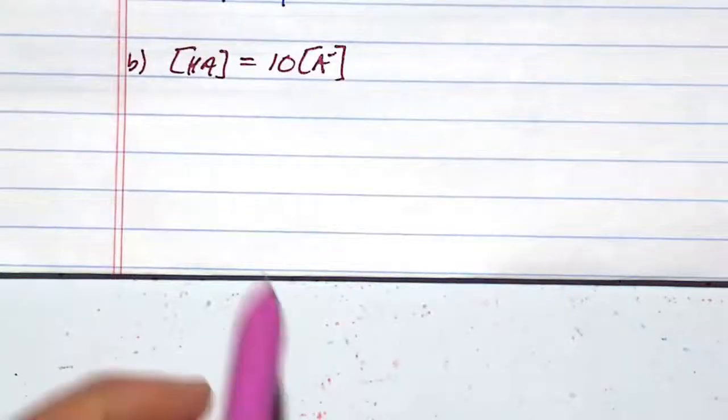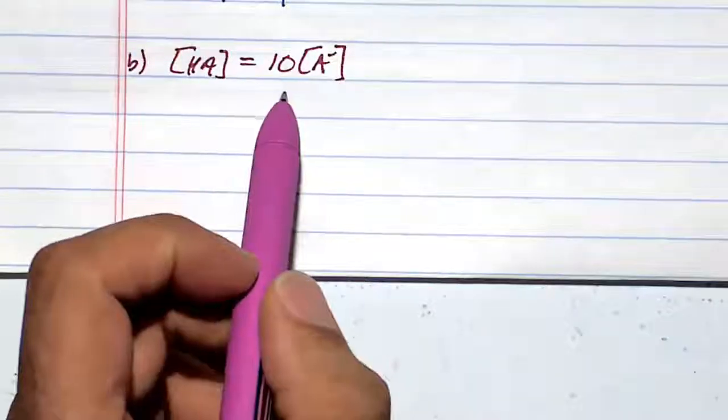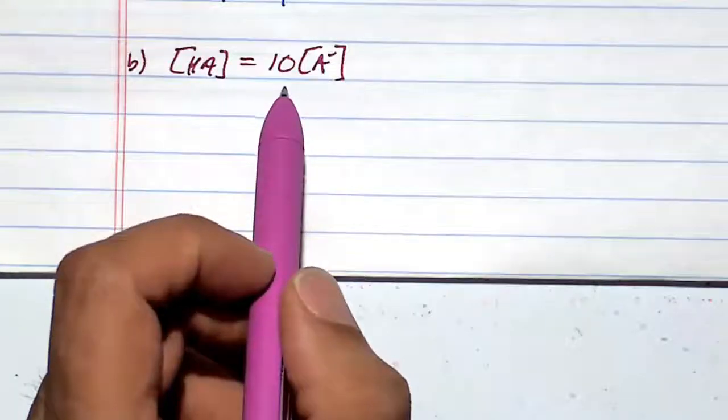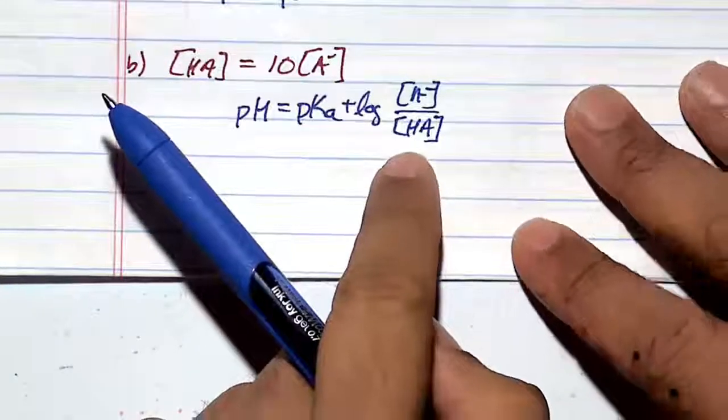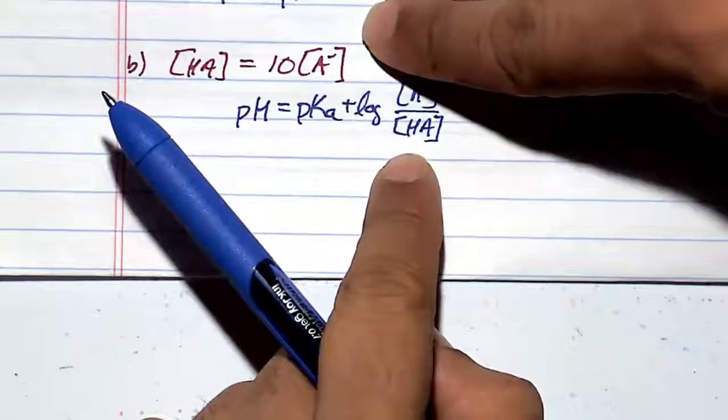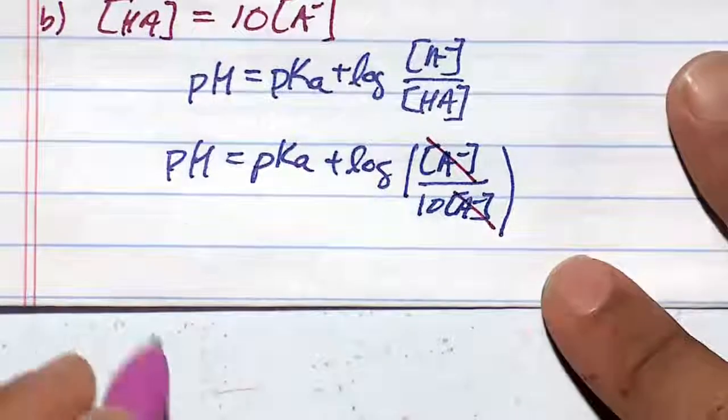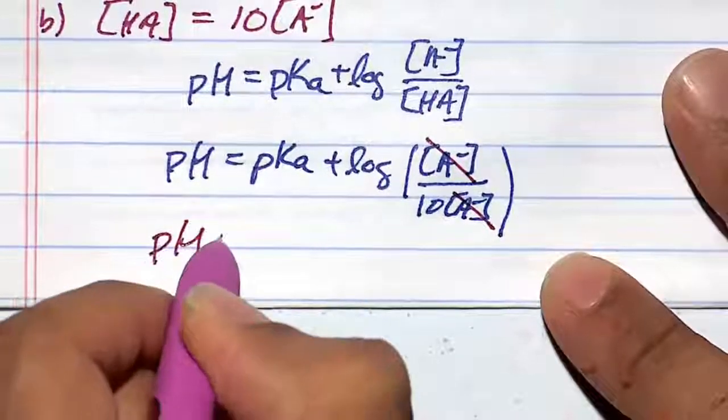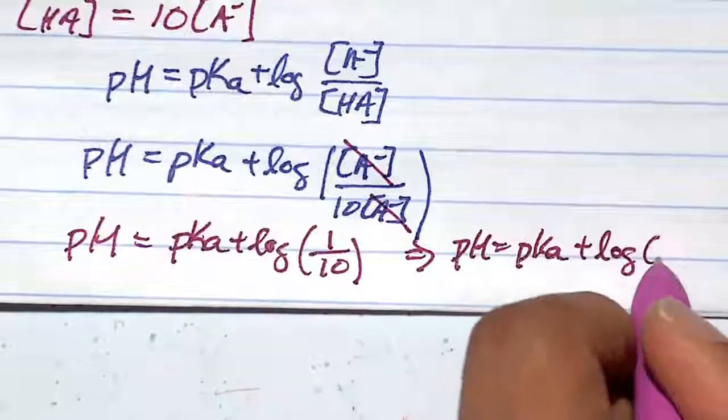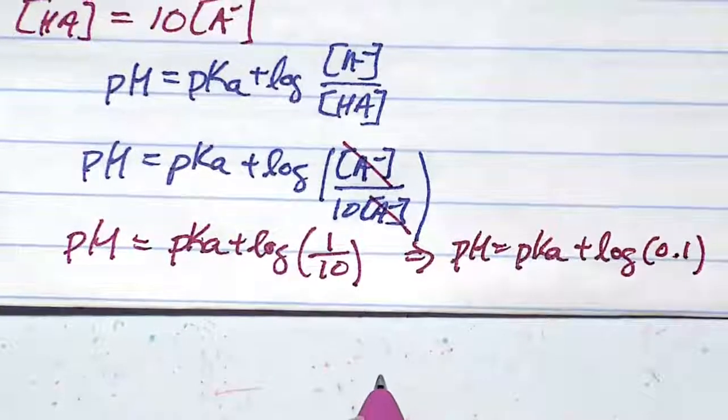In an opposite situation where the acid concentration is 10 times the concentration of a conjugate base. Where HA is actually 10 times A-, so I'm just going to plug in HA. The A- here and the A- cancel. And you're left with pH equals pKa plus log of 0.1, which is minus 1 on your calculator.